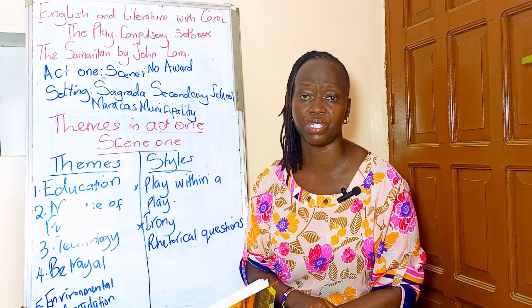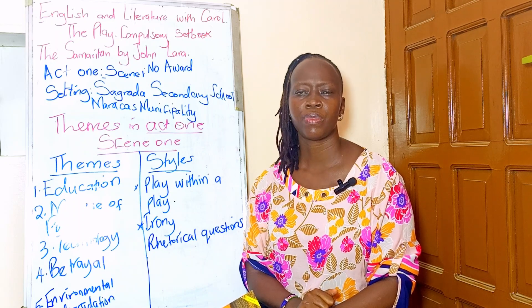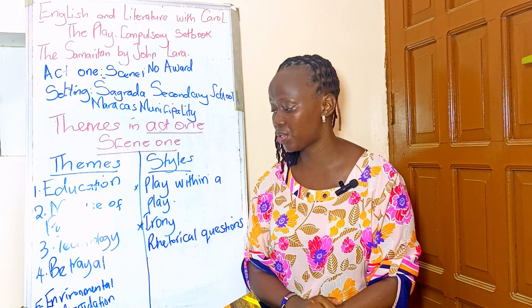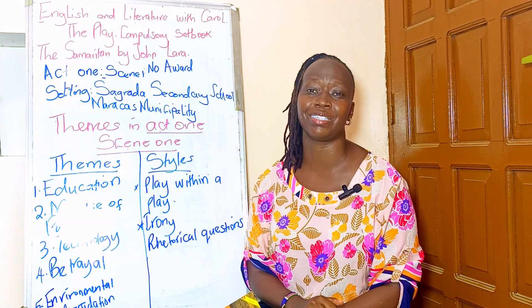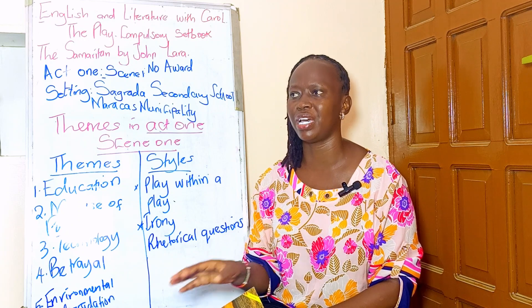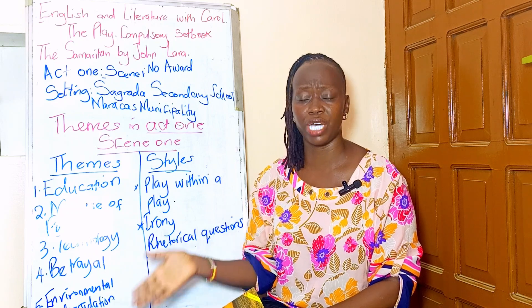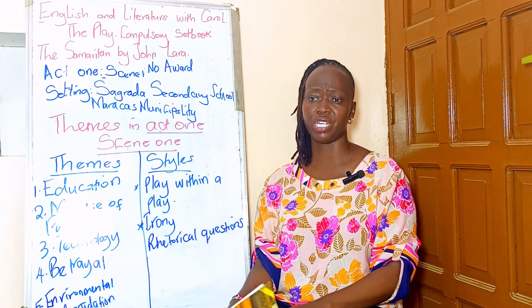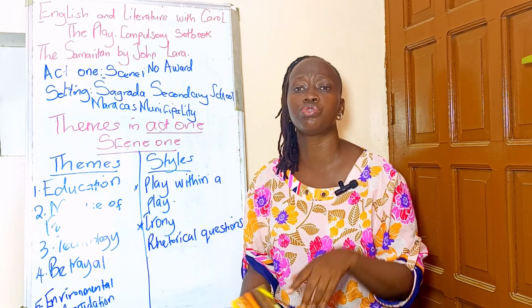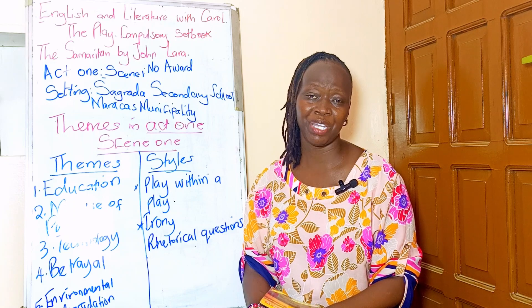There is also a theme of environmental degradation. Through the play within a play — the skit that Montano and Alvita were enacting — you will notice that environmental degradation is presented as a theme. They were talking about how everywhere was polluted; you would even have a running nose constantly. They are also trying to deal with environmental degradation by taking photographs of what is happening in the environment. So those are some of the themes.